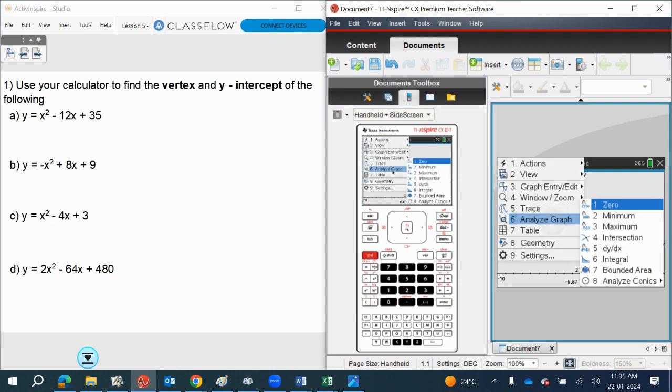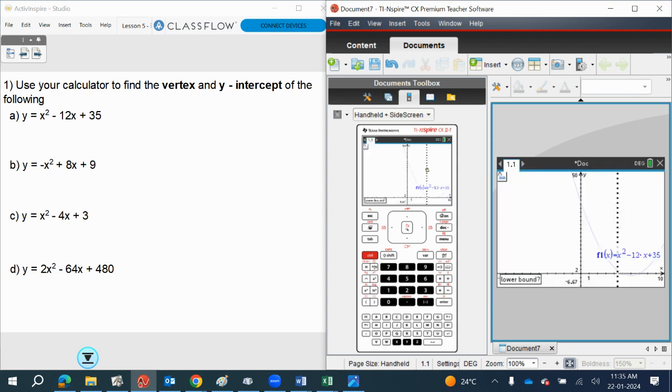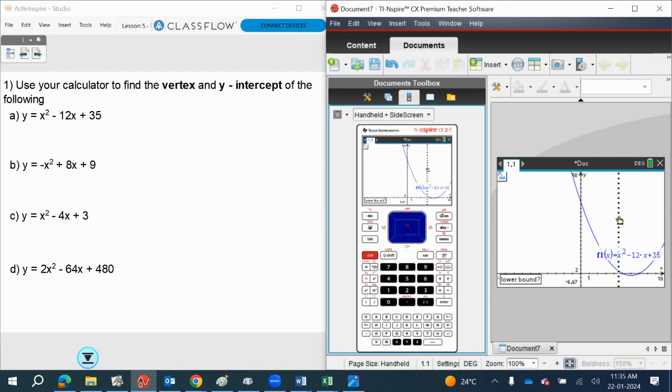I can use the menu, analyze graph, find the minimum. It asks me for the lower bound, so I go to the left of where it occurs, I click, that then asks me for the upper bound. Upper bound, I scroll across, click. So now I can see that the minimum is at 6, minus 1.